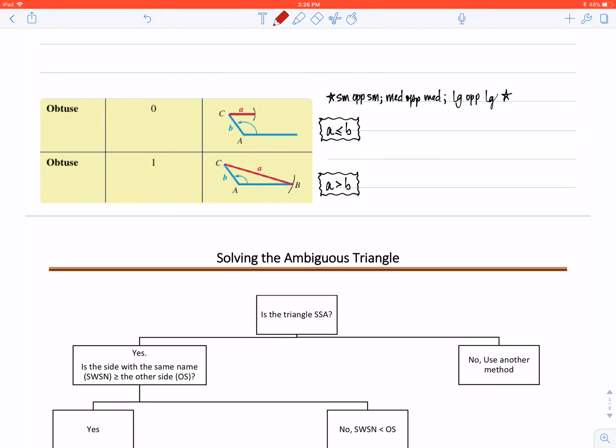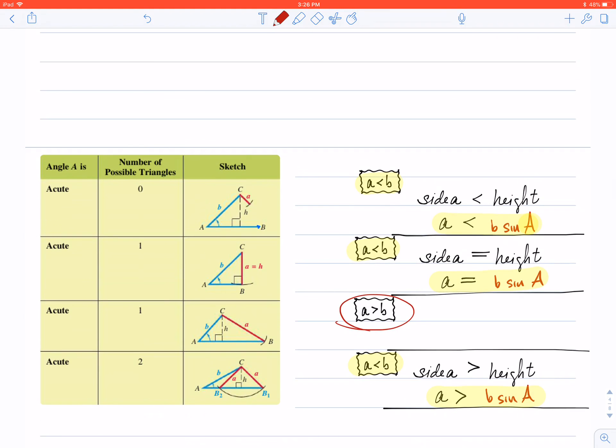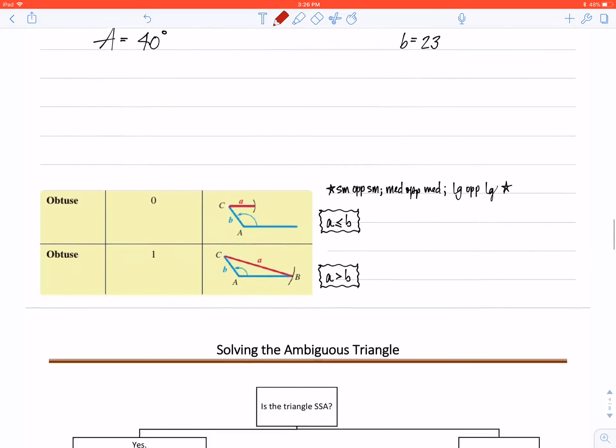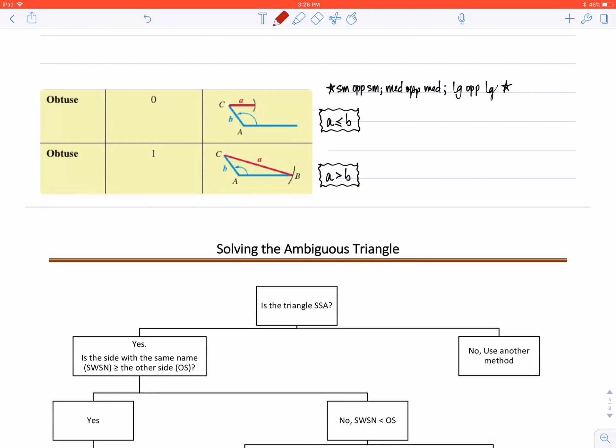I'd like to talk about one more option here. Notice that on the first four that I gave you every single time, angle A was an acute angle. In this case, my angle A is an obtuse angle. Angle A is obtuse. So one thing that I'd like for you to remember is something that I've mentioned in class multiple times, and that is the small side is always opposite the small angle, medium opposite medium, large opposite large.